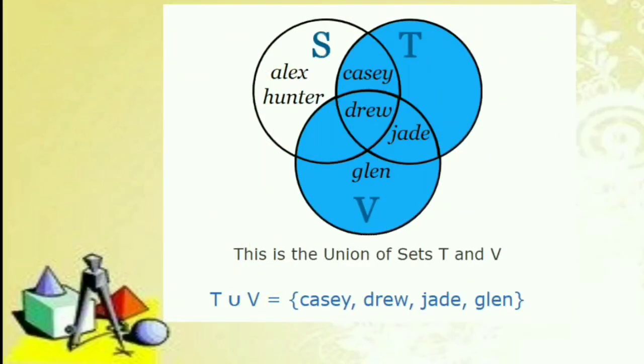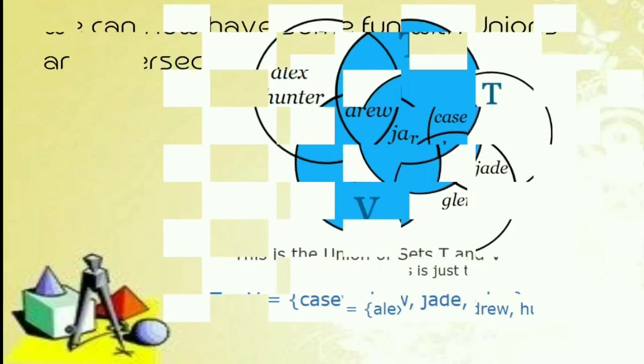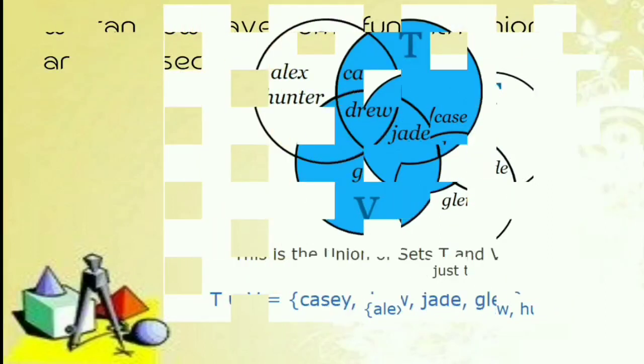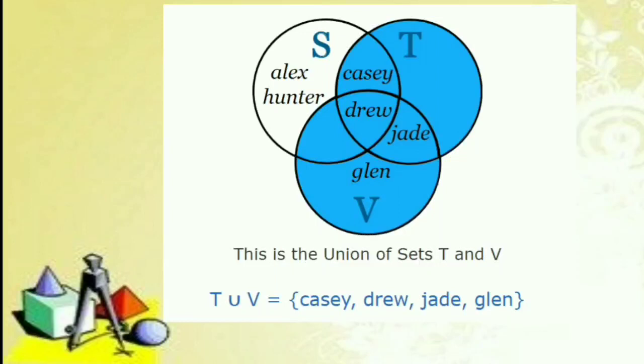This is the union of T and V. Kapag pinagsama natin, tignan nyo ang set ng S: si Alex, si Cassie, si Drew, at si Hunter. Pero pag ginawa natin ang union of T and V, the union set of T and V will be Cassie, Drew, Jade, and Glenn — apat na sila ngayon.